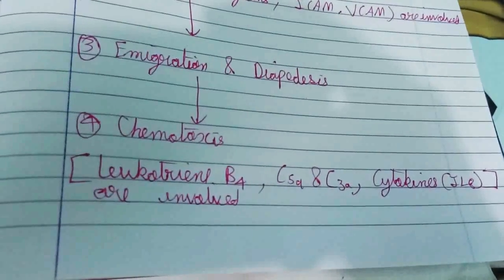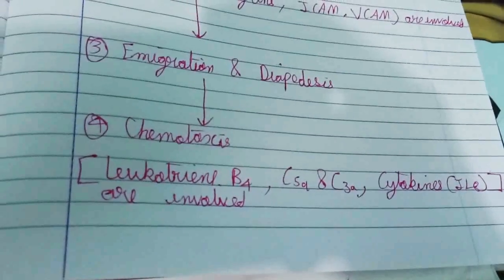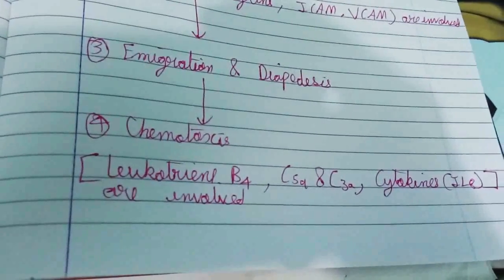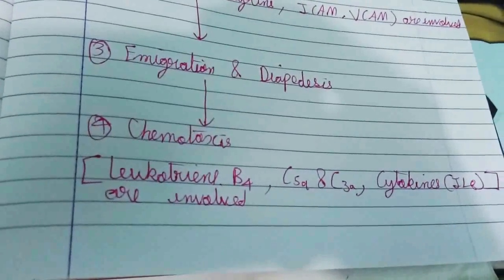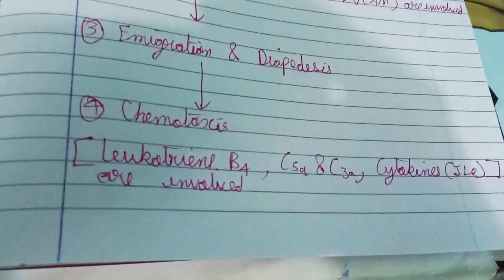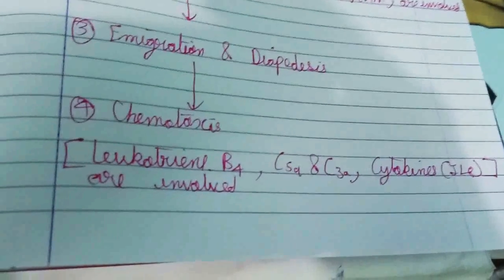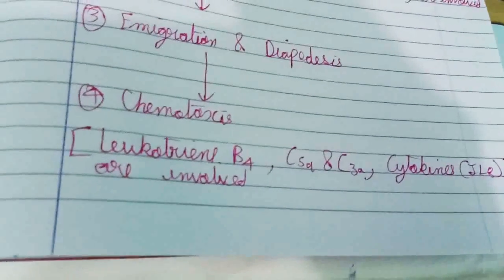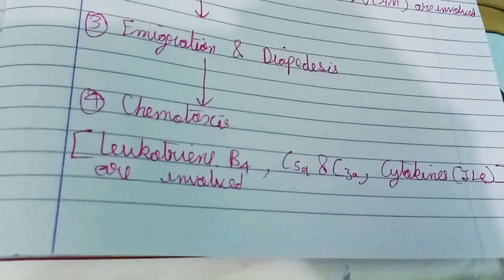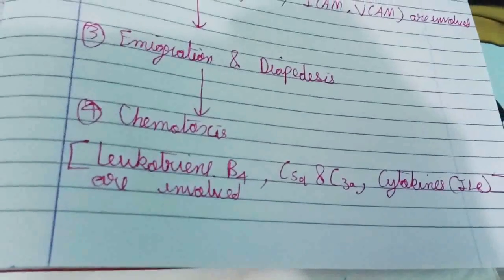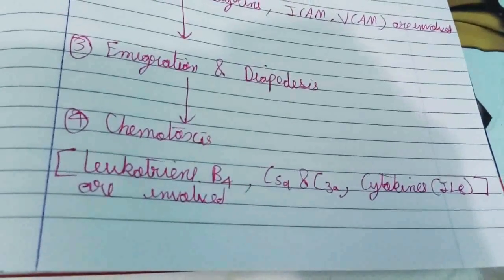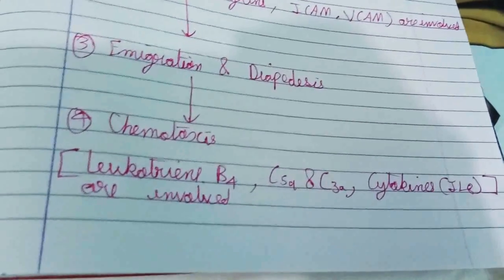The final step is chemotaxis — the transmigration of leukocytes after crossing several barriers: endothelium, basement membrane, perivascular myofibroblast matrix — to reach the interstitial tissue. Chemotactic factors required for this process include leukotriene B4, complement proteins C5a and C3a, and cytokines such as interleukin-8. This completes the exudation of leukocytes; the second cellular process is phagocytosis.